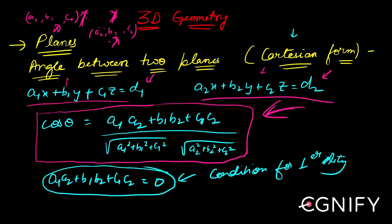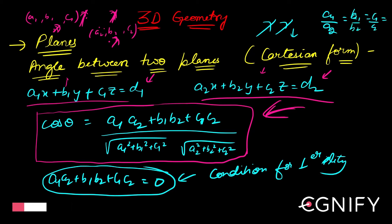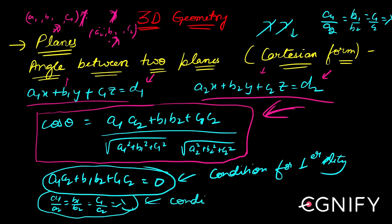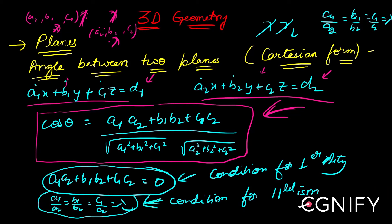Likewise, for the condition for parallelism in Cartesian form: if two vectors are parallel, their DRs are in the same ratio — a1/a2 = b1/b2 = c1/c2 = λ. This is the condition for parallelism. If the two planes are parallel, these quantities must obey this relation. With this, we are done with the angle between two planes from the Cartesian point of view as well. Let's move on to the next topic: line of intersection of two planes.